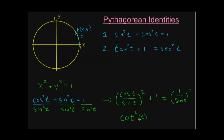And 1 over sine squared is 1 over sine squared. We have functions for these: cosine over sine is the same as x over y, or in other words cotangent. And 1 over sine is the same as 1 over y, or in other words cosecant. That's our third Pythagorean identity: 1 plus cotangent squared of t is equal to cosecant squared of t.